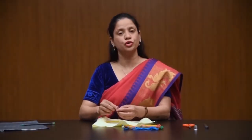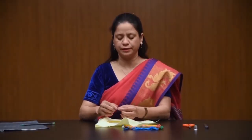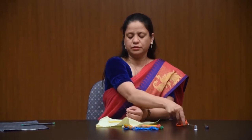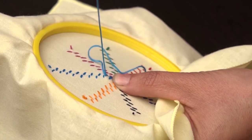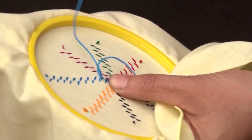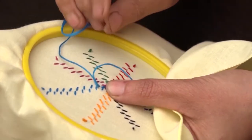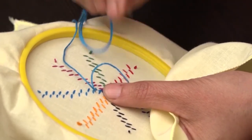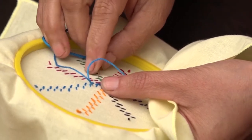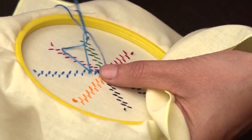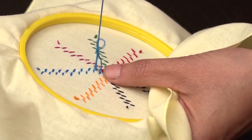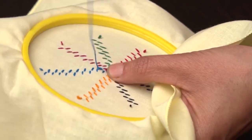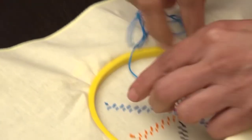You can use two or more color threads. After completion of the design, take the thread to the back side of the fabric and make a loop, then pull the thread through the loop to end the stitch. Cut the extra thread.